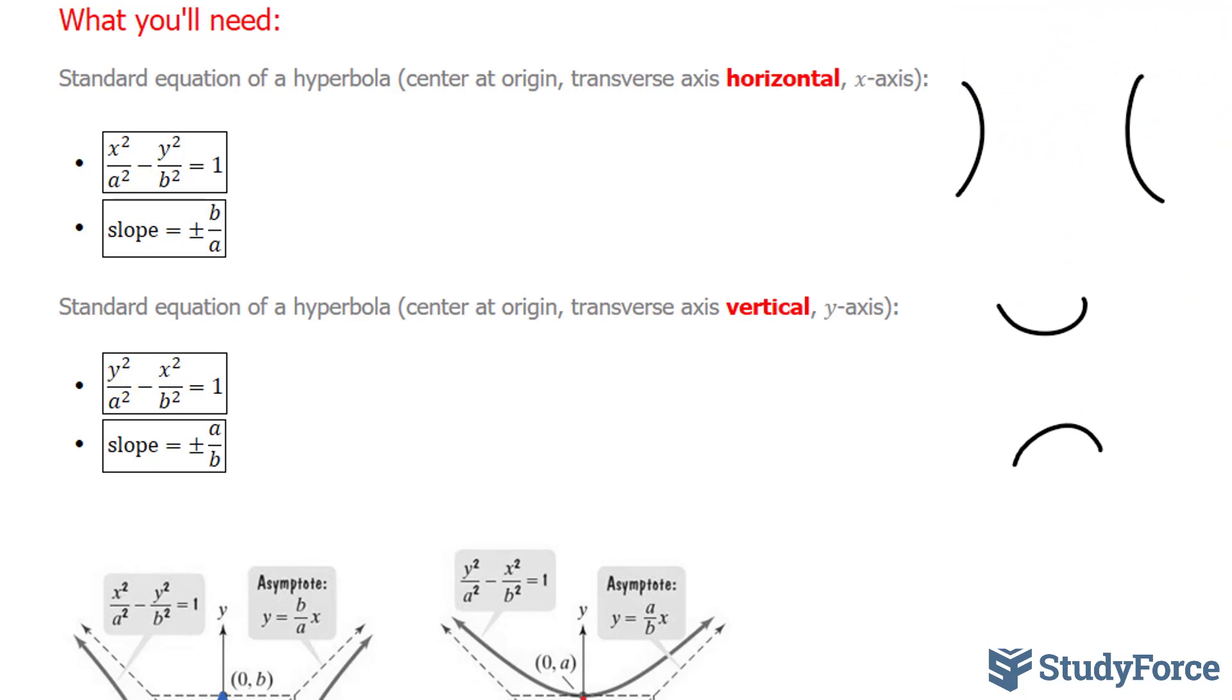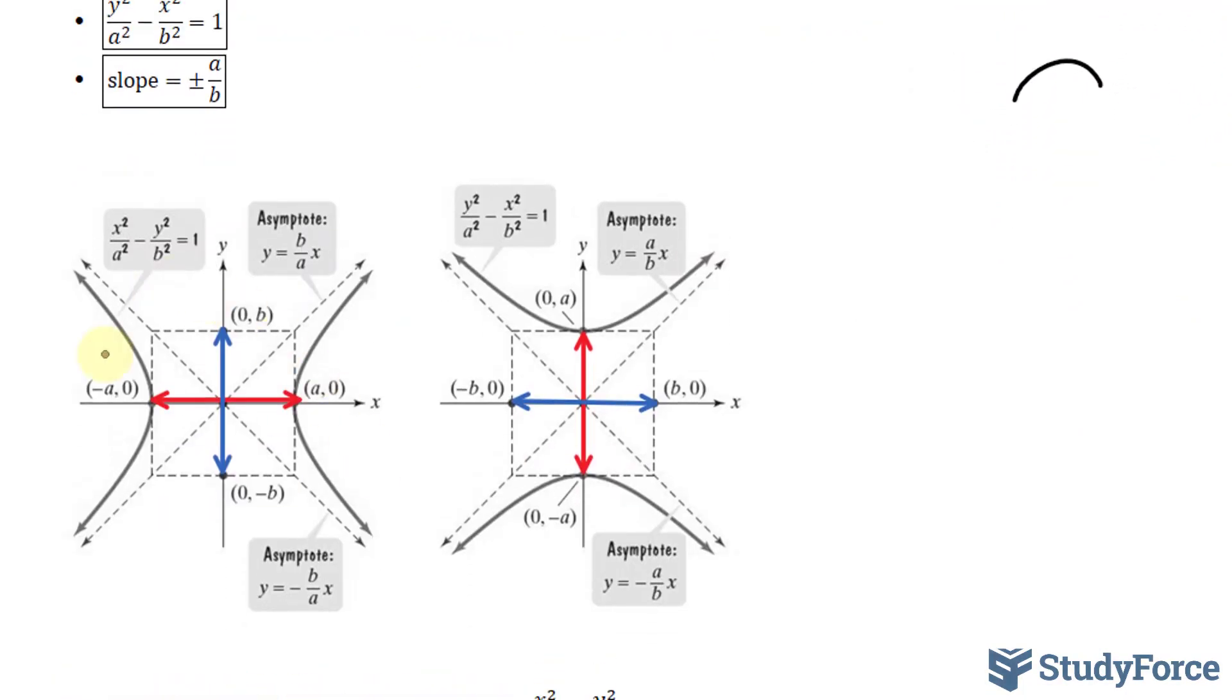And to give you a better visual of this, take a look. Here we have the transverse axis that's horizontal. So the vertices are on the horizontal plane.